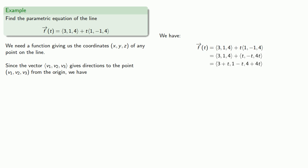We can read the coordinates because the coordinates of the point are the same as the components of the vector. So our x coordinate is 3 + t, our y coordinate is 1 - t, and our z coordinate is 4 + 4t.